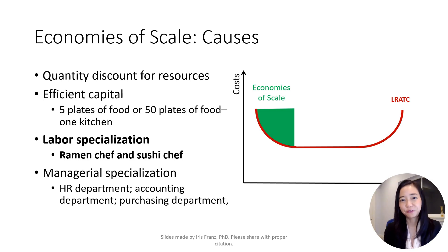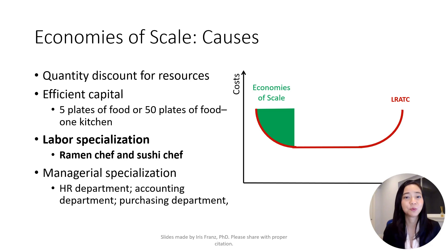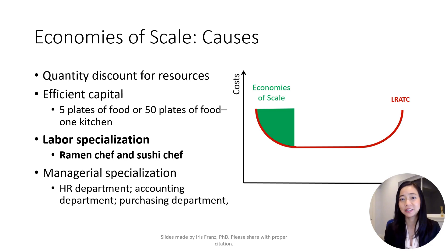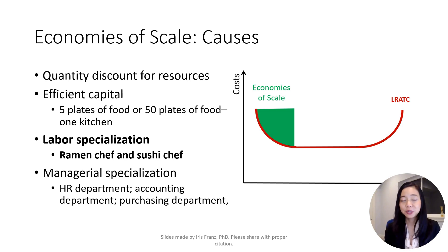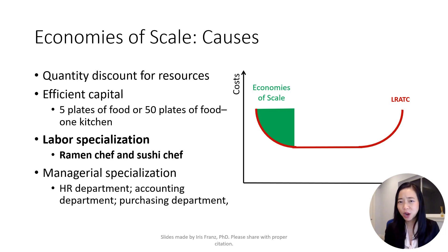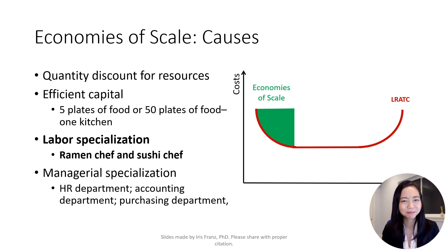Third, the firm will benefit from labor specialization. Imagine a small Japanese restaurant that initially has only one chef. The chef must be very busy coming to the sushi bar in front to make sushi and then rushing back to the kitchen to make ramen.